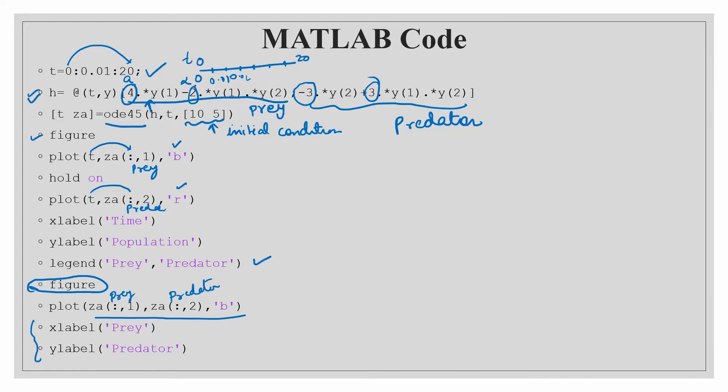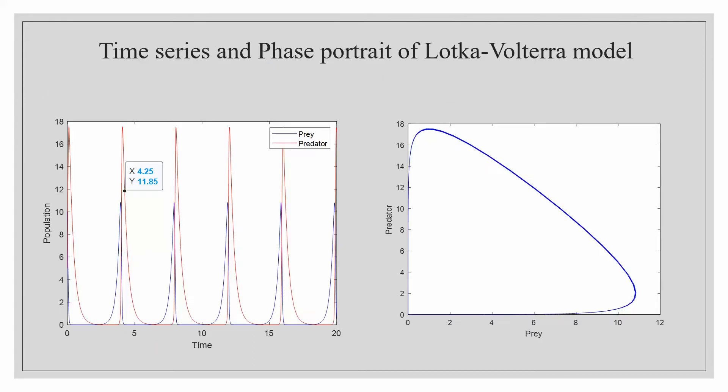Now if you run this code in MATLAB you will obtain these two figures. You can easily see that this one is the time axis and this one is a population density axis. So you can see since we have taken time from 0 to 20. So it is simulating the result for 0 to 20 and you can see that how oscillatory dynamics is observed between both prey and predator. This blue curve is representing prey and this red curve is representing predator.